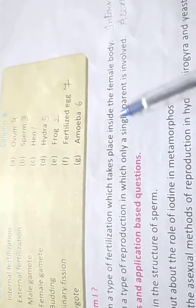Who am I? I am a type of fertilization which takes place inside the female body. Mai ek aisa fertilization hoon jo ki female body ke andar hota hoon - that is the internal fertilization. I am a type of reproduction in which only a single parent is involved - that is the asexual reproduction.